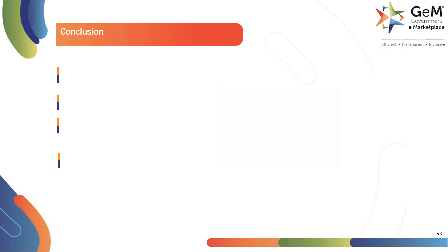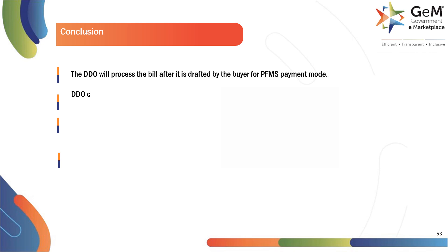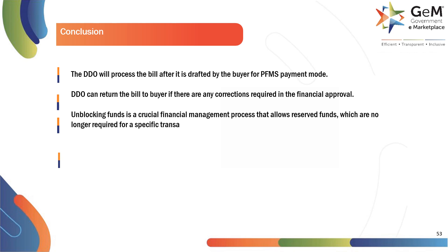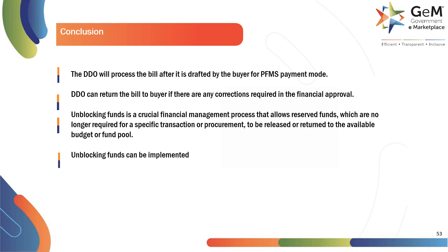Here are the key takeaways from this module. The DDO will process the bill after it is drafted by the buyer for PFMS payment mode. DDO can return the bill to buyer if there are any corrections required in the financial approval. Unblocking funds is a crucial financial management process that allows reserved funds, which are no longer required for a specific transaction or procurement, to be released or returned to the available budget or fund pool. Unblocking funds can be implemented in two primary scenarios: when bills are in a terminal state and when bills are in a non-terminal state.